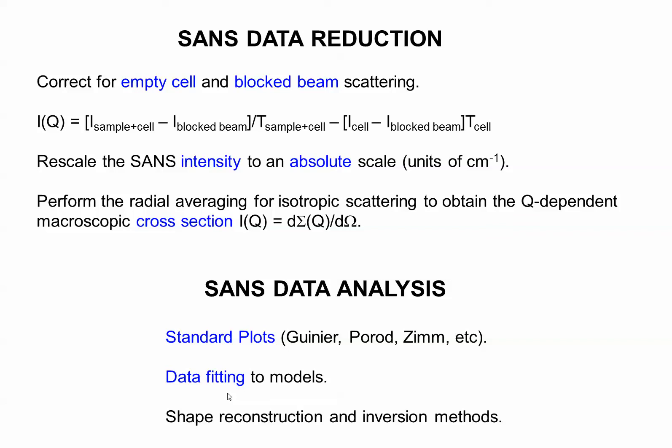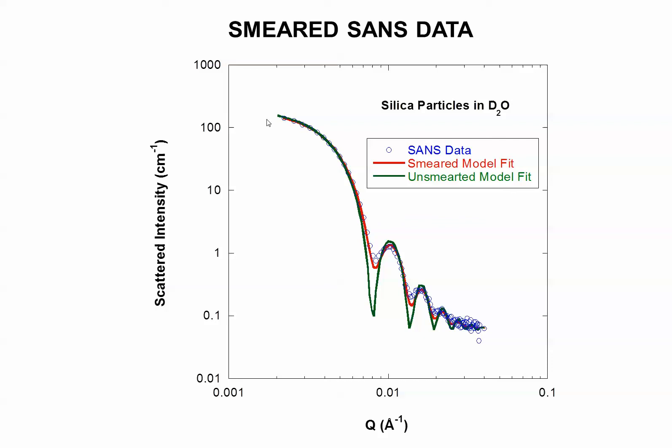This is the most important thing for data analysis. After you look at your intensity versus Q, you decide what model to use. Do some data fitting to models. We have over a hundred models that we have built up over the years. Here you will need SANS staff to help you decide on which models would be useful for your scattering.